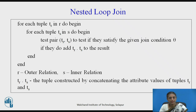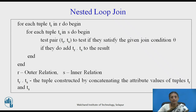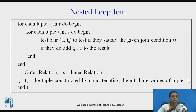Let us recall what is nested loop join. If we want to find the result of R join S, where R and S are two relations, then for every tuple of R which is the outer relation, we check the tuple with S. For each tuple of R, entire S will be scanned and the pairs matching on the joining condition theta will be obtained. The number of block transfers and seek operations are very high in nested loop join. That is why we go for block nested loop join, and today we will see that if indexes are available for the inner relation, we can go for index nested loop join.